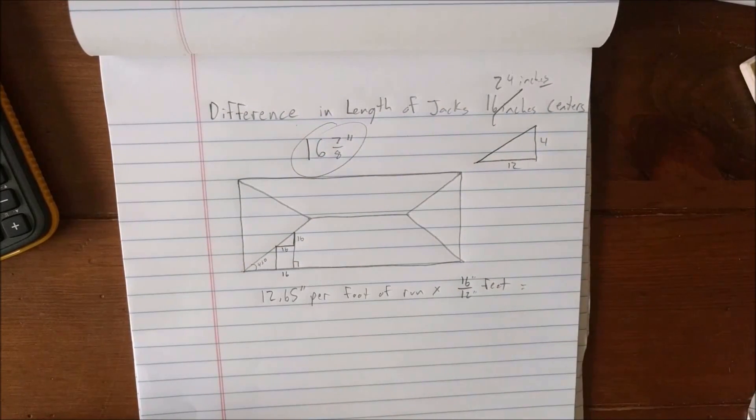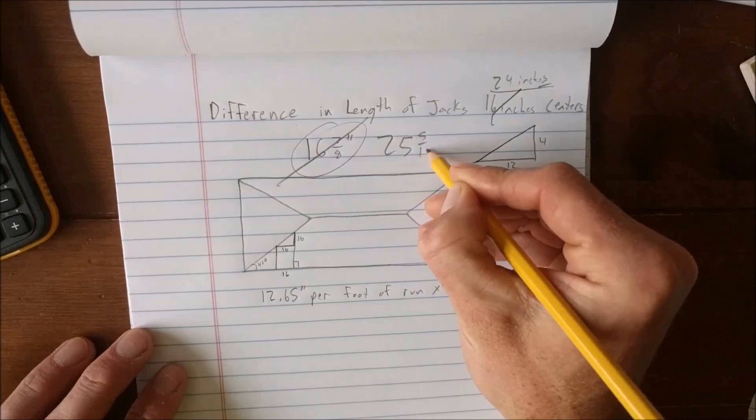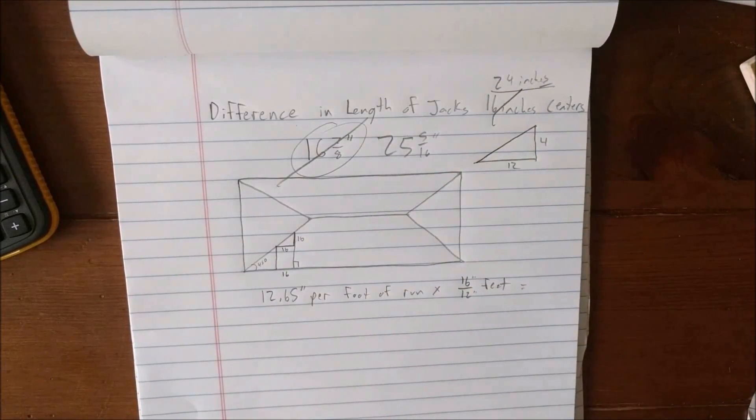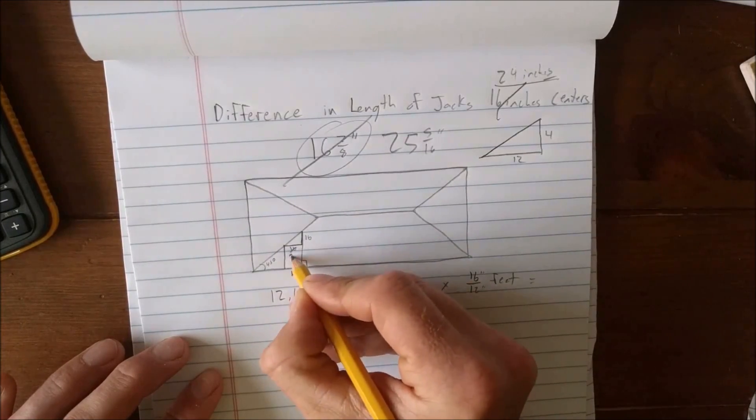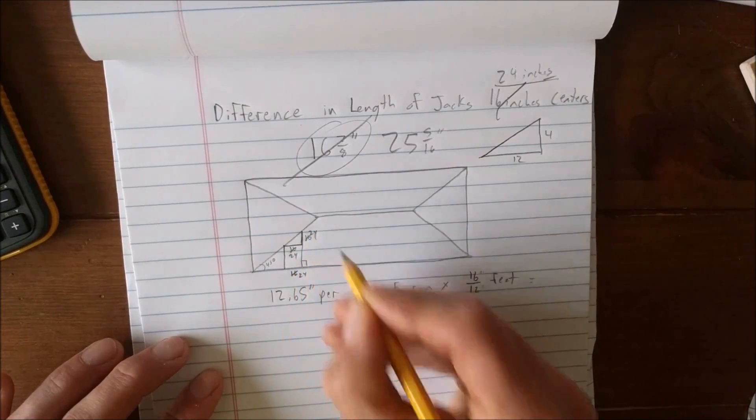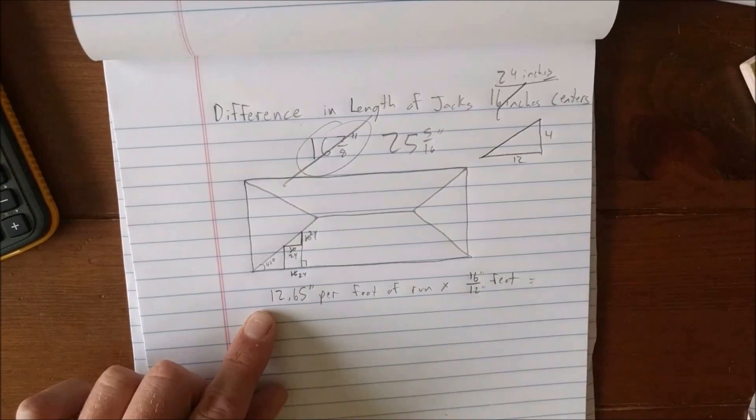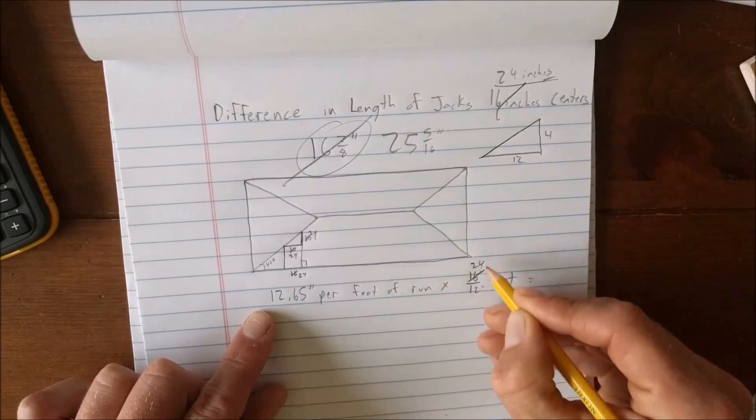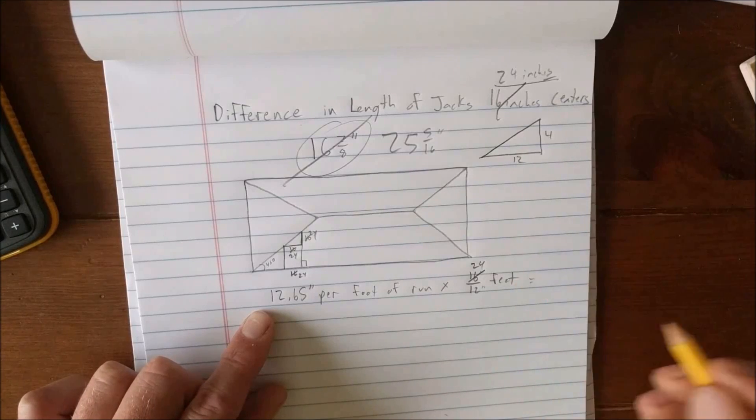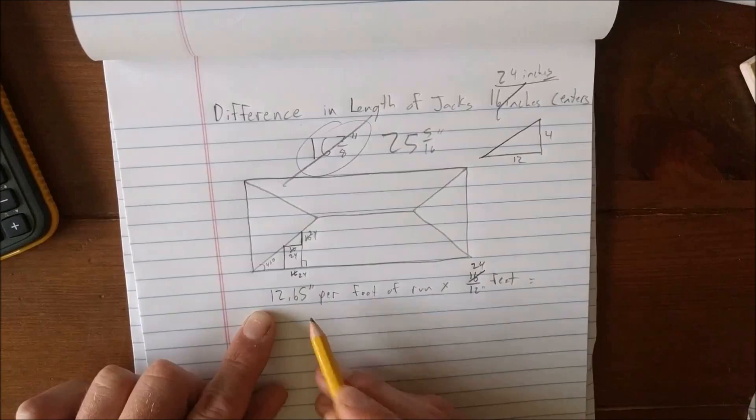For line five, the difference in lengths of jacks with two feet centers, the problem is just as easy. We need to match the number now 25 and 5/16 inches. That's the difference, the common difference. So now instead of 16 we have 24 inches, and everything else is still the same. 12.6 inches per foot of run, that's for a common rafter. And now instead of 16 over 12 we have 24 over 12. It's exactly 2 feet. So all we need to do is multiply 12.65 times 2.